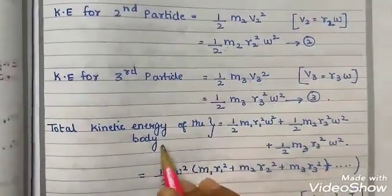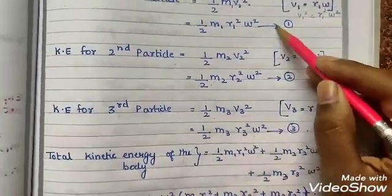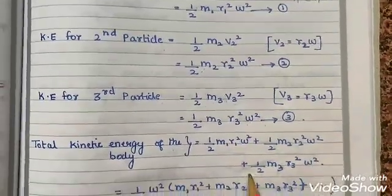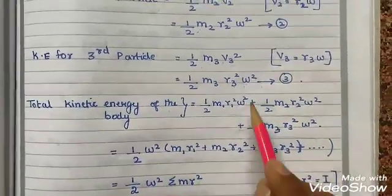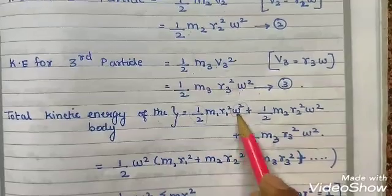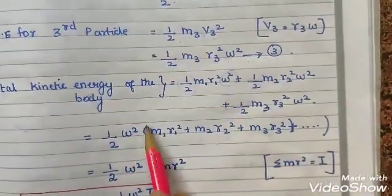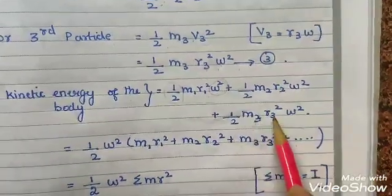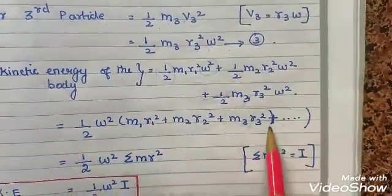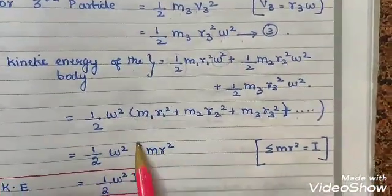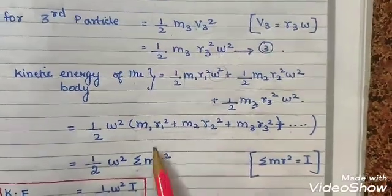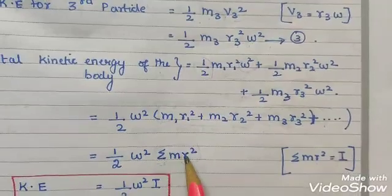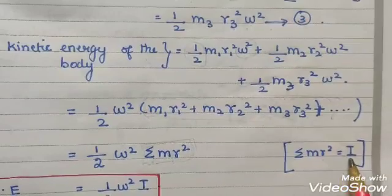Total kinetic energy of the body equals the sum of equations 1, 2, and 3. We add them up and take ½·omega² as common: KE = ½·omega²·(m1·r1² + m2·r2² + m3·r3²). This term - the summation of mr² - is nothing but the moment of inertia I. So summation of mr² equals I.